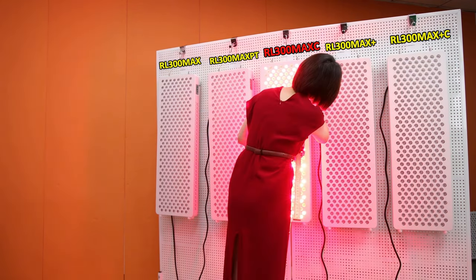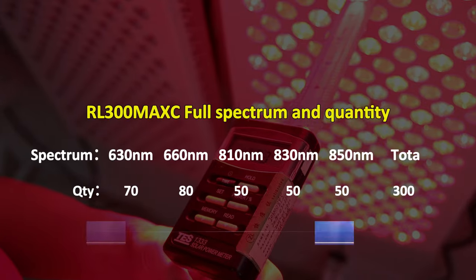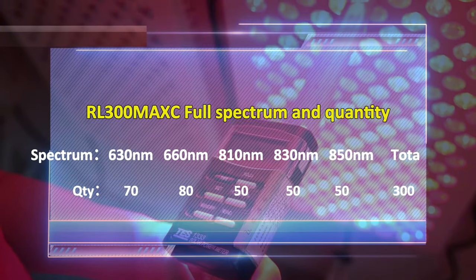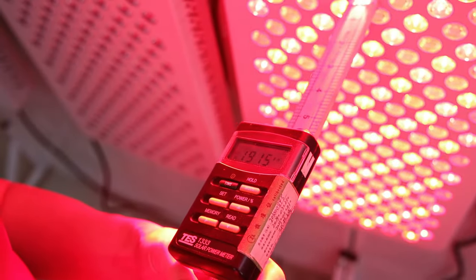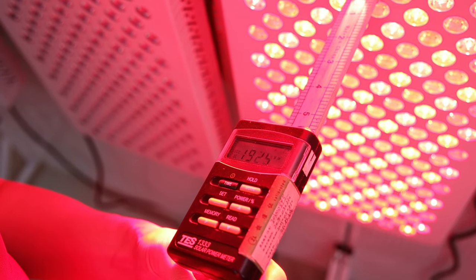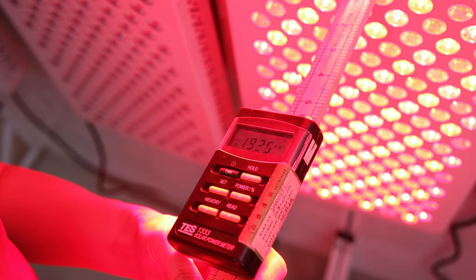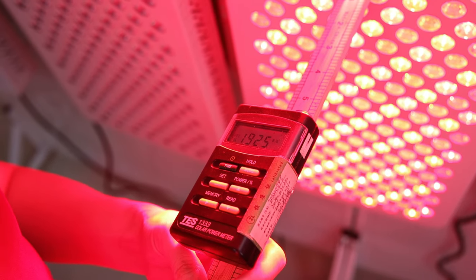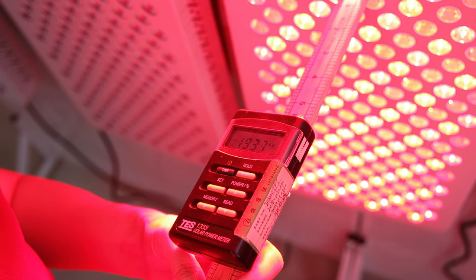The next one is the RL300 Max C. The irradiance is lower than the PT spectrum. We can read from the machine right now: at 6 inches, the irradiance is about 190 to 192 mW per square centimeter.